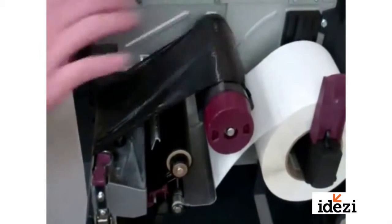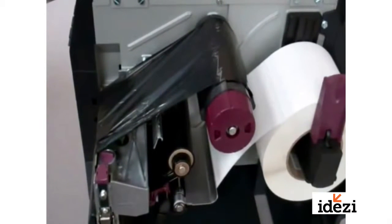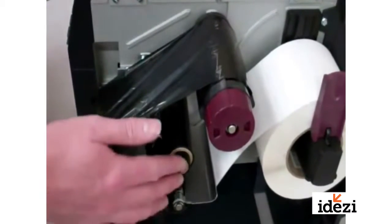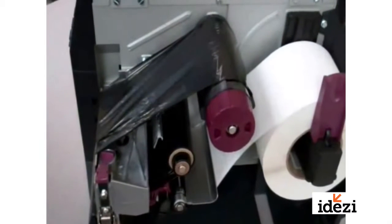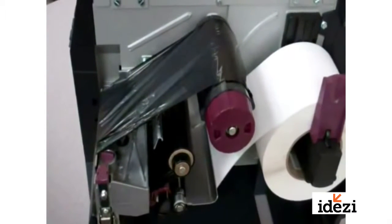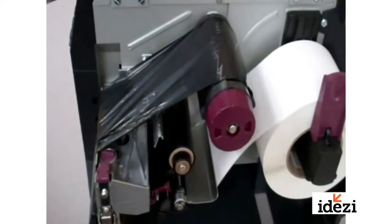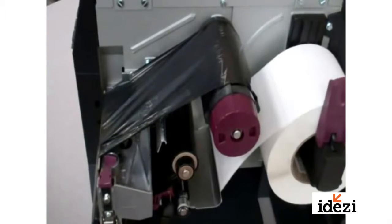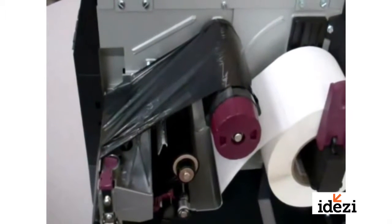Your ribbon take up spindle here is simply just to take up the used ribbon so that it doesn't roll out onto the floor. So if your ribbon supply is too tight or your ribbon take up is too tight, they'll cause a whole wealth of problems. They can also cause problems other than ribbon wrinkle including dragging ribbon, which will give you a poor edge definition and a great print all the way across your label.